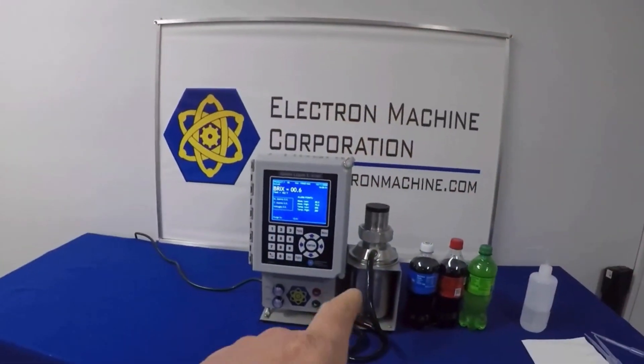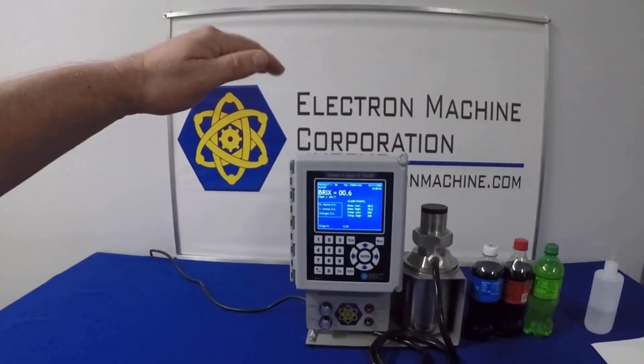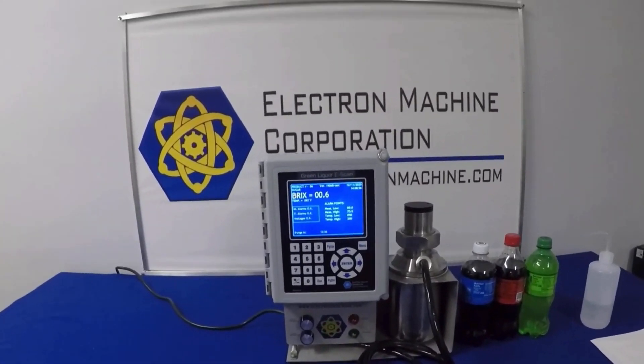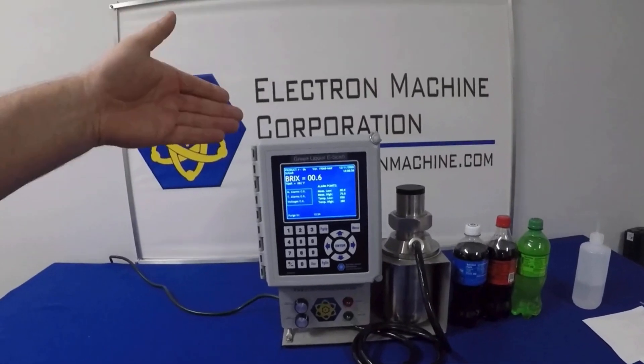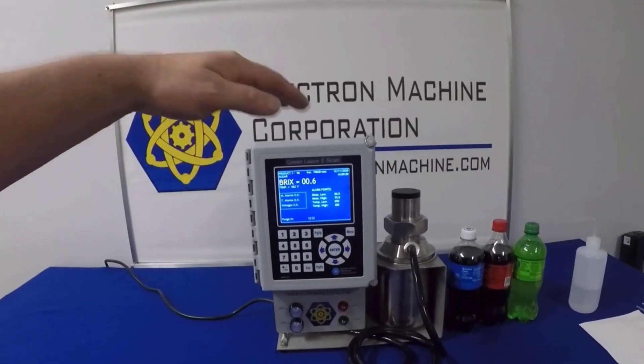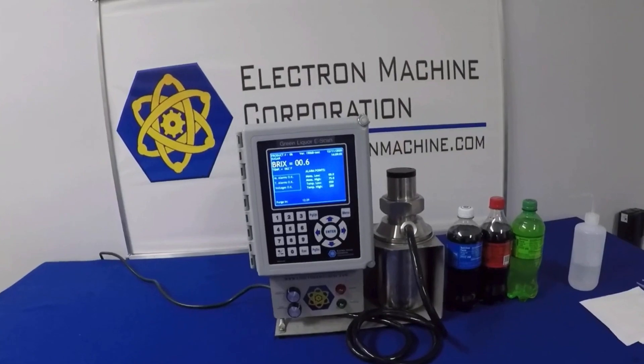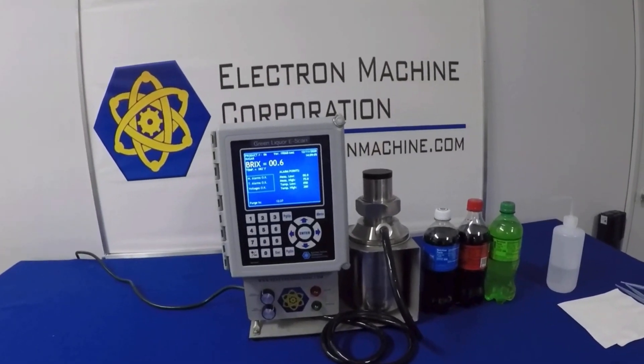So we have a couple popular sodas over here and we're going to show you how our inline instrument would be used to measure this product. The instrument's in a static state. We have a sample cup on there and we will be placing samples on it. This normally would be installed in the process line.